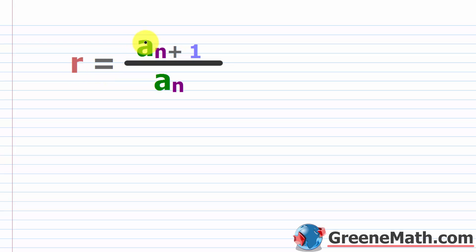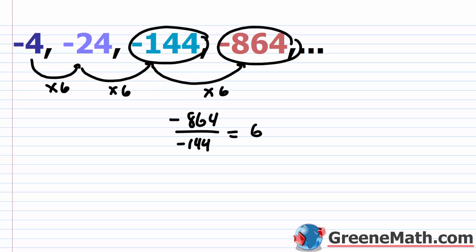So R equals a sub n+1 over a sub n. Coming back down here, R equals — in this case this is a sub 4 over a sub 3. You take two terms that are next to each other. The one on the right, which has a higher value for n, goes in the numerator. The one on the left, with a lower value for n, goes in the denominator.